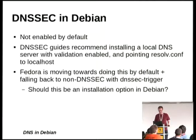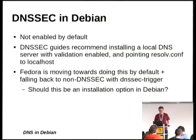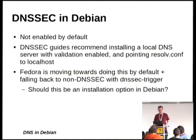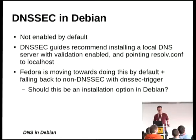I'm a maintainer of the unbound package. Unbound, if you install it, will by default give you a DNSSEC-validating server. I've been using it for a number of years and it's my currently preferred validating DNSSEC server. It's possible this could be an option, but I don't think I would recommend it as something to enable by default anytime soon. I think we should wait and see how this works out in Fedora and move appropriately.